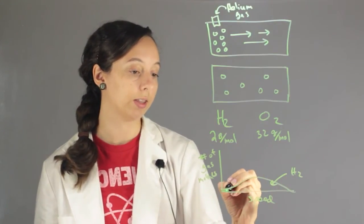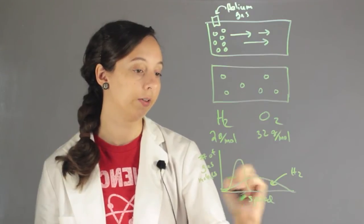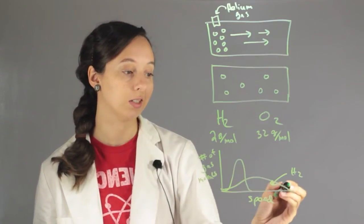And oxygen is going to look more like this. So still a bell curve, but much more condensed, and overall a lot slower.